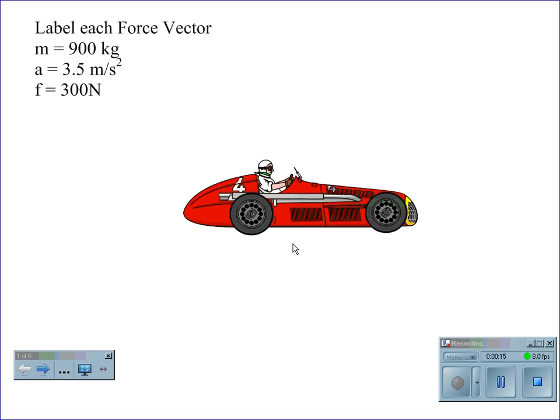we would begin by finding first the weight. The weight is always perpendicular to the surface that the object is on. We would then look for normal force, which is exactly opposite of all the downward forces.